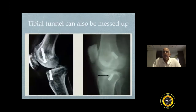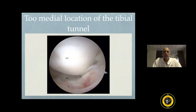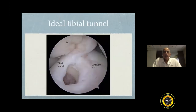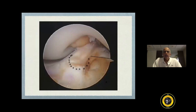The tibial tunnel placement can also be messed up. The tibial tunnel could be too far anterior or too far posterior, too far medial or lateral, and you could encroach on the articular cartilage. The ideal tibial tunnel should be just lateral to the medial tibial spine and in the region of the posterior margin of the anterior horn of the lateral meniscus. These are the steps to create a tibial tunnel.